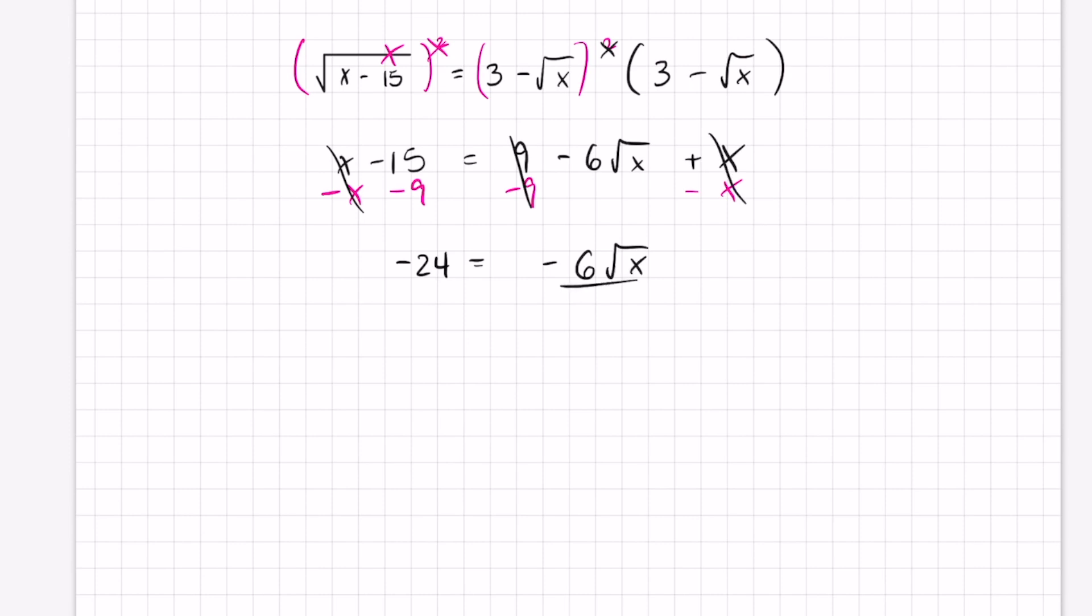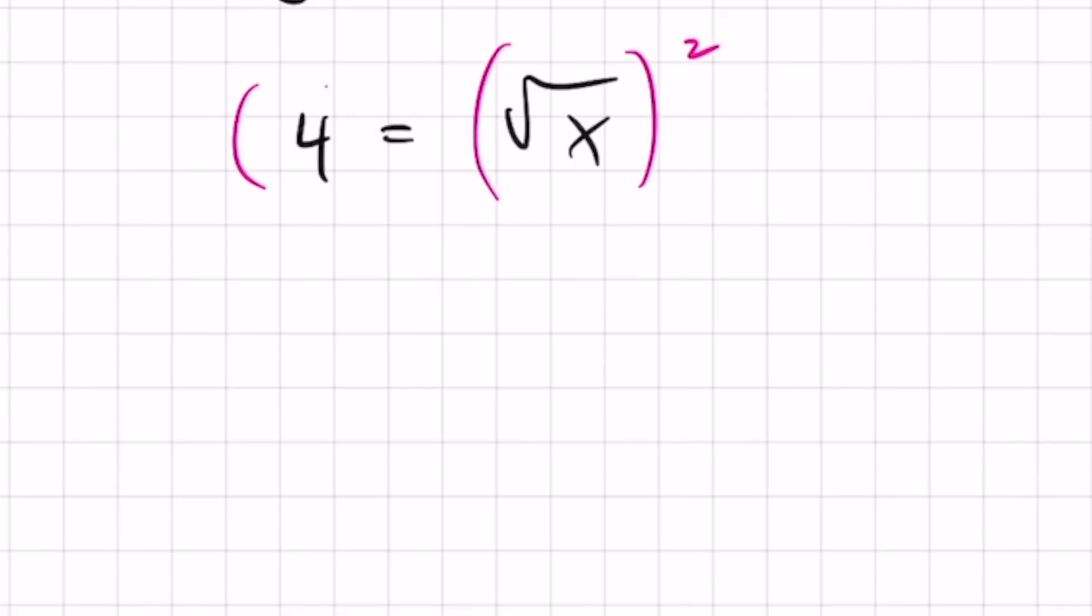Get rid of that negative 6 by dividing by negative 6. I'm left with 4 equals the square root of x. To get rid of the square root, once again, square both sides and we get 16 equals x. Done.